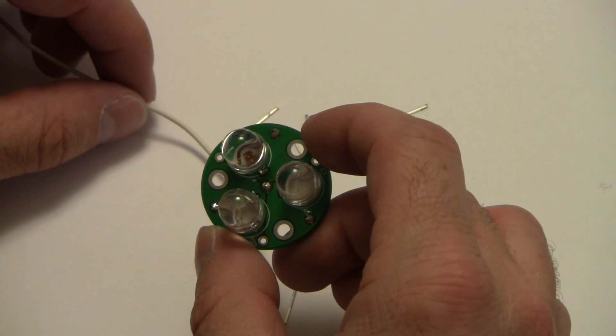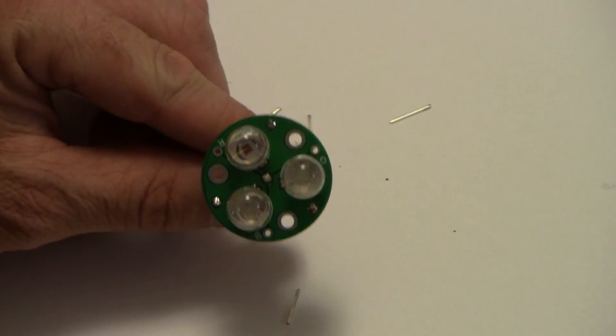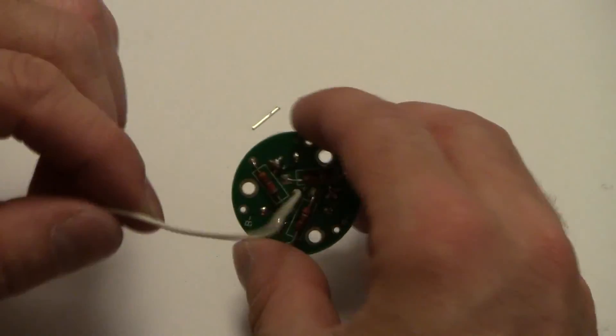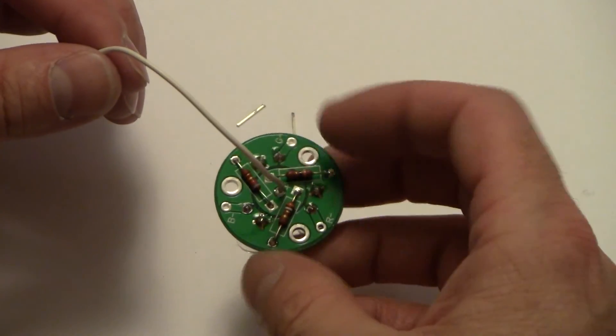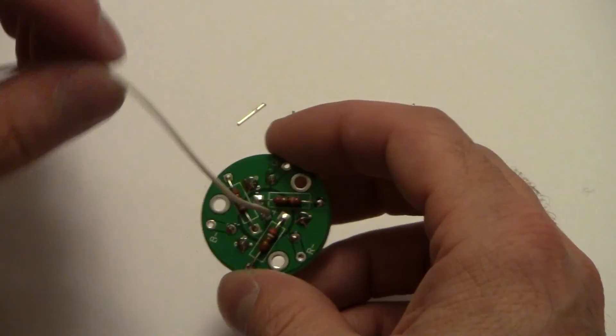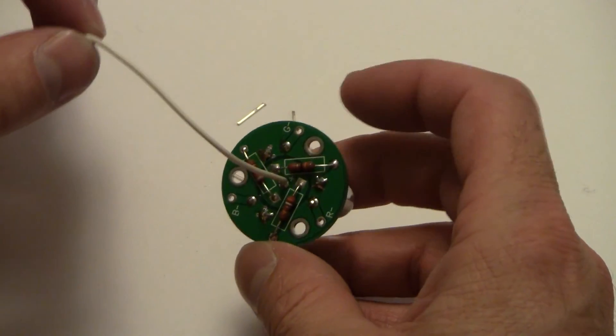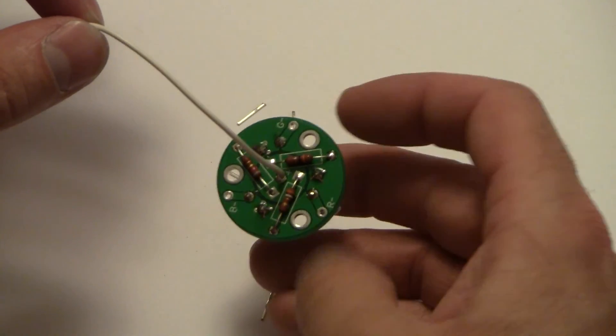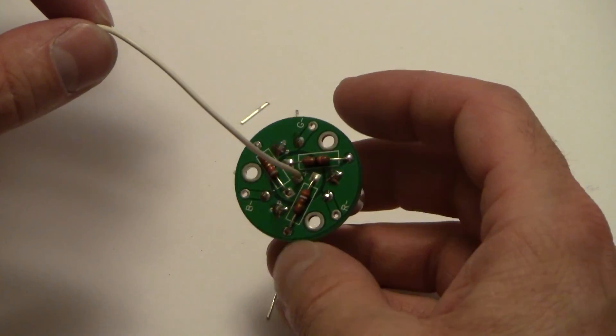And so here we are at this point. We've got all the LEDs mounted and all the resistors mounted and also our positive wire. The only thing we've got left now is the three control wires, the red, green, and blue control wires.